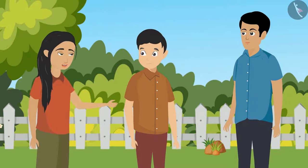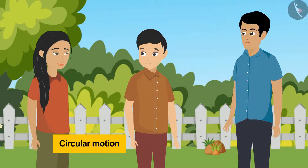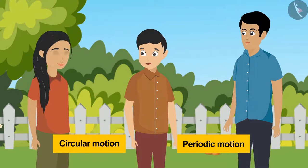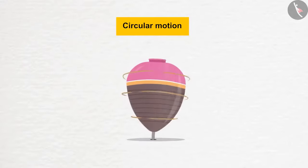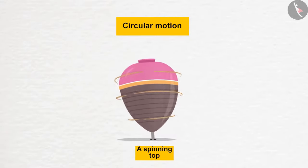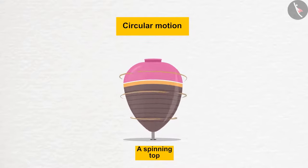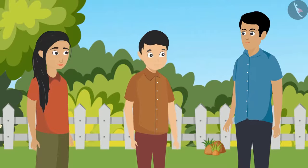Pavan, I have read that motions are of various types, for example circular motion and periodic motion. Please explain with an example. Let's take an example of circular motion. One example of this type of motion is a rotating spinning top. A spinning top can keep on rotating at the same place. It doesn't change its place, but is still in motion.